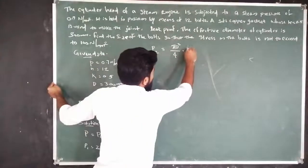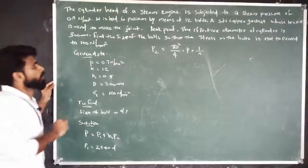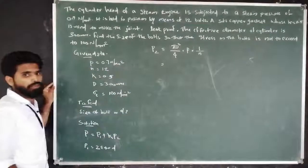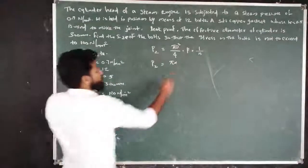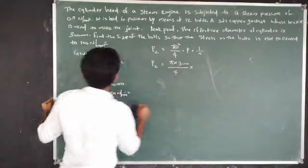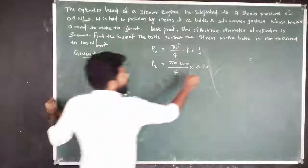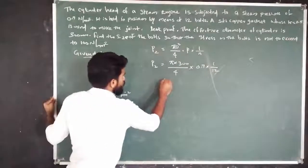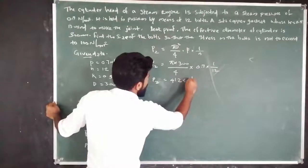Substituting the values: P2 = (π × 300² / 4) × 0.7 × (1/12). Calculating this gives P2 = 4100.25 Newtons.